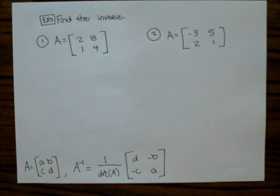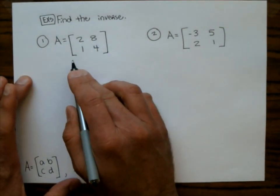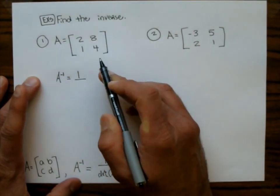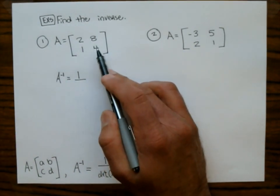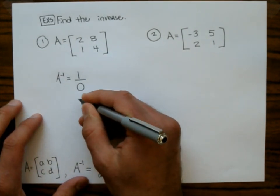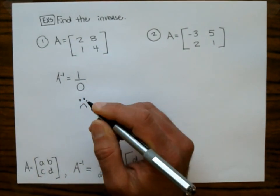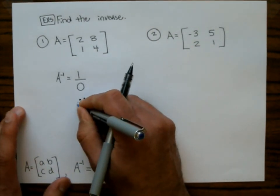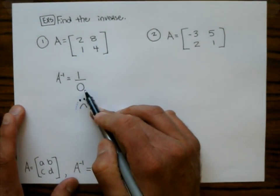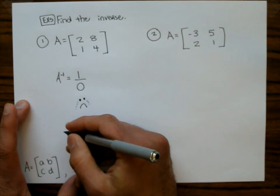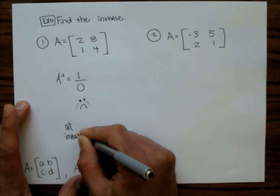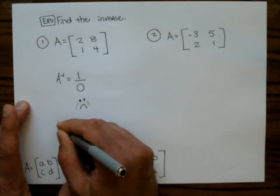Let's figure out the inverse of this first matrix. A⁻¹ = 1 over the determinant. The determinant is 2×4 − 8×1 = 8 − 8 = 0. This makes us cry — when the determinant is 0, the matrix is not invertible; it has no inverse matrix.